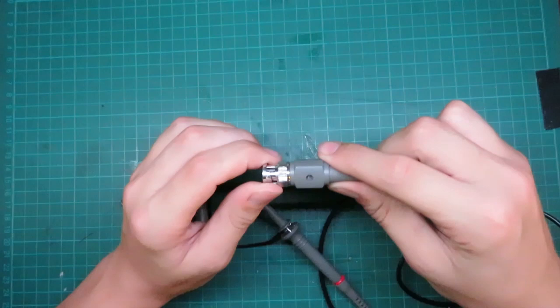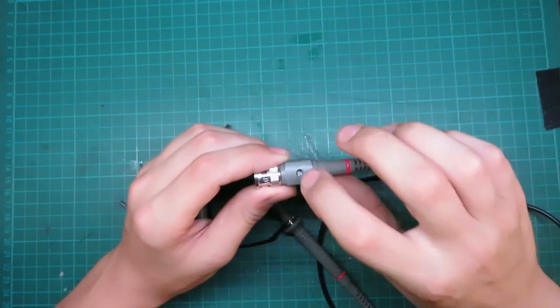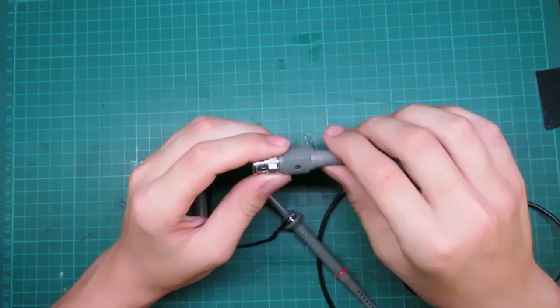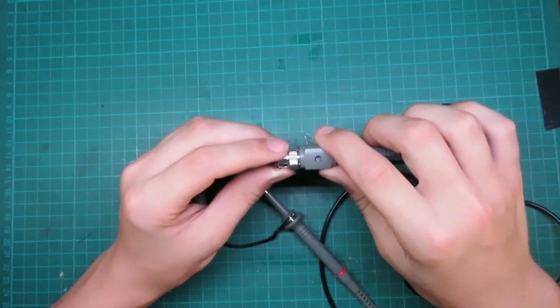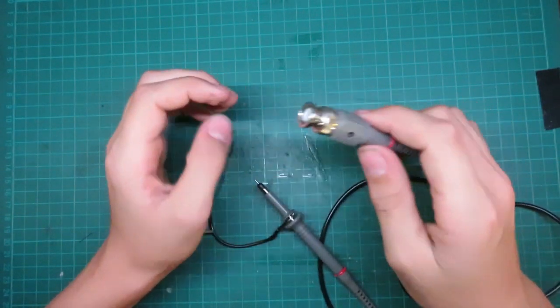And coming to this end, we have our BNC connector. And then we have that, there's a hole there. And what that will be for is for compensating the probe. And I'll show you how to do that in just a minute.